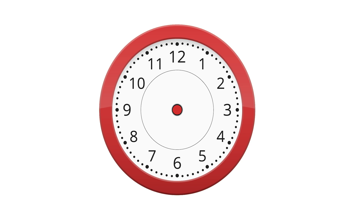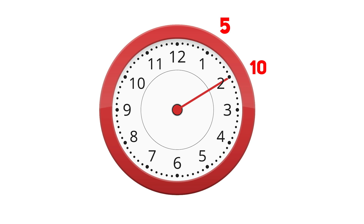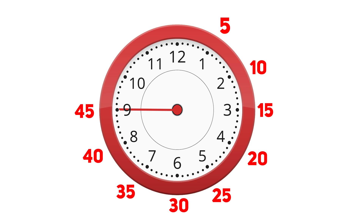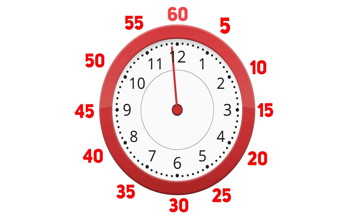Now let us learn how to read seconds, minutes, and hours on a clock. We will begin with the seconds hand. Whenever we read seconds on a clock, each number on the clock is interpreted as a multiple of five: 1 as 5, 2 as 10, 3 as 15, 4 as 20, 5 as 25, 6 as 30, 7 as 35, 8 as 40, 9 as 45, 10 as 50, 11 as 55, and 12 as 60.